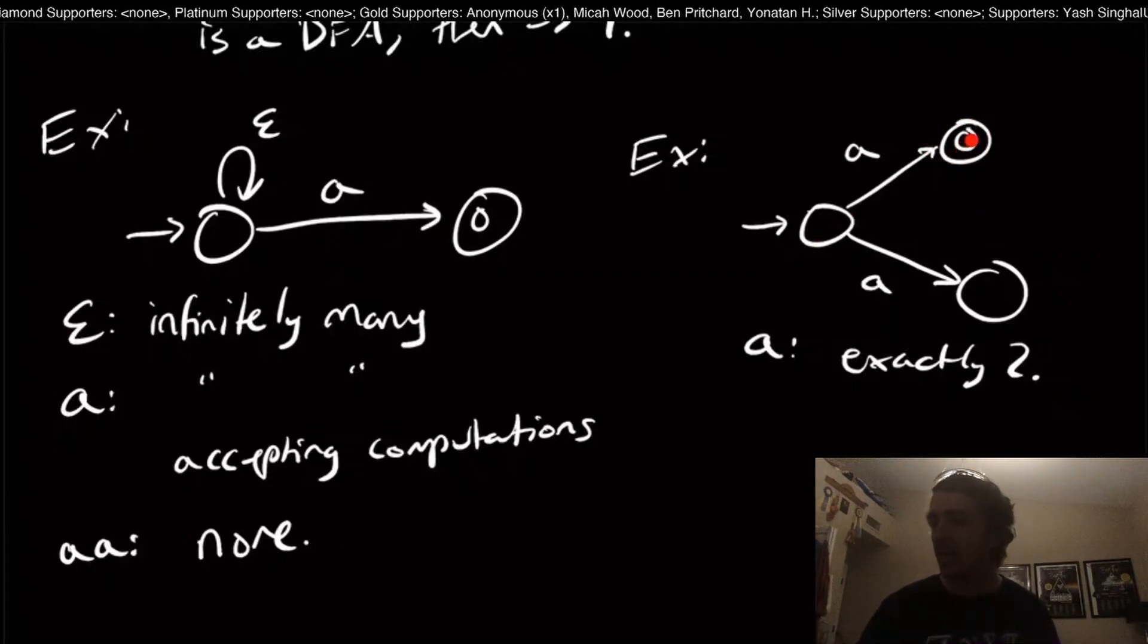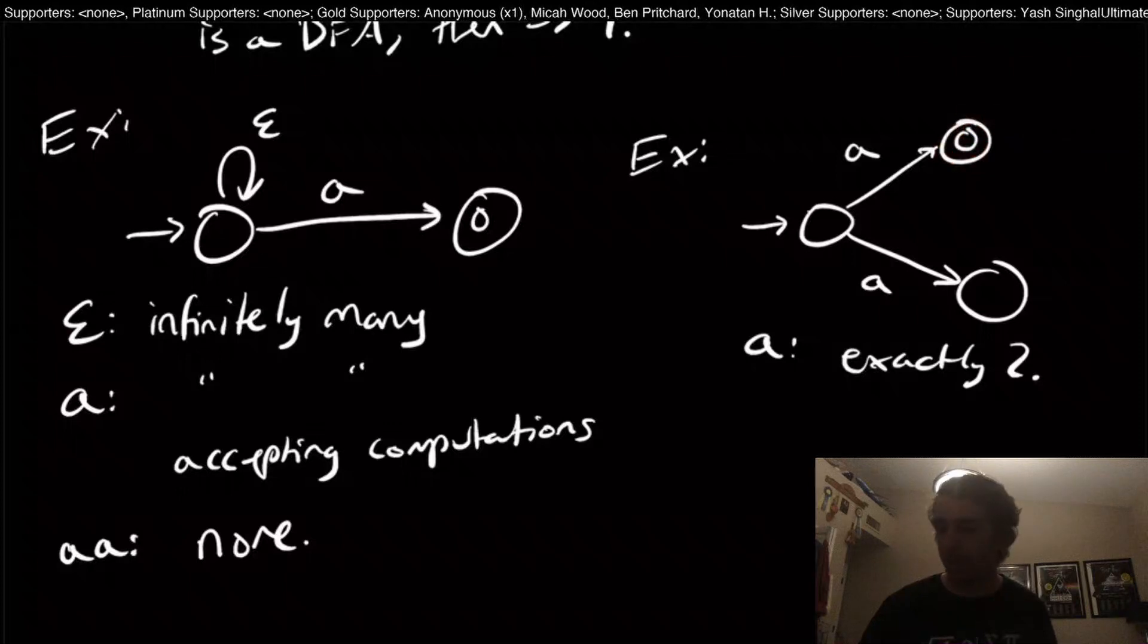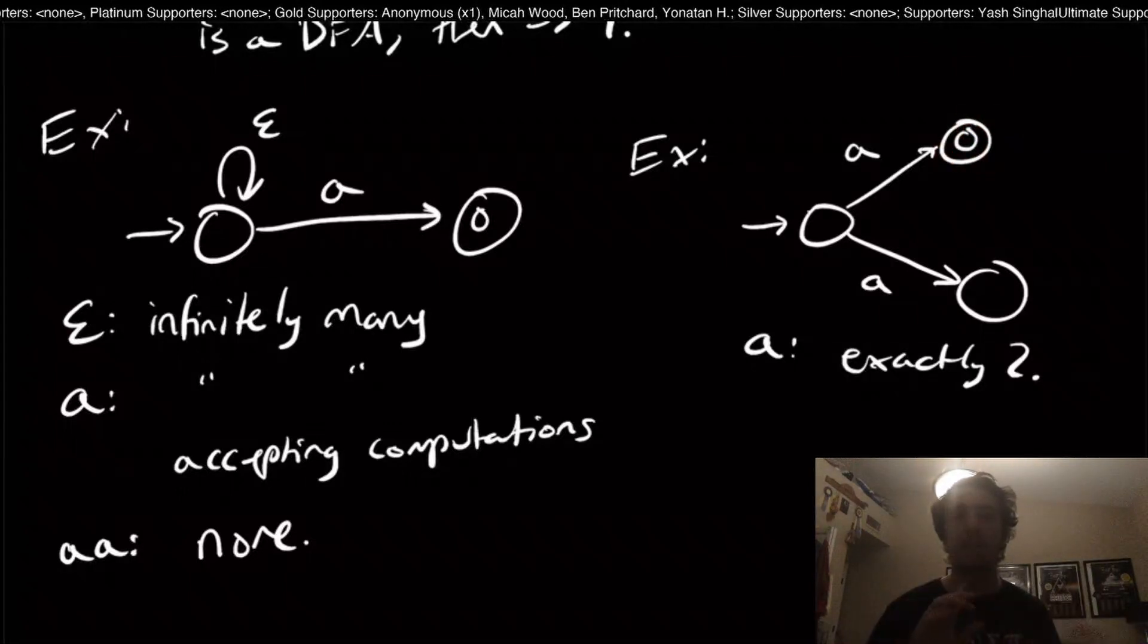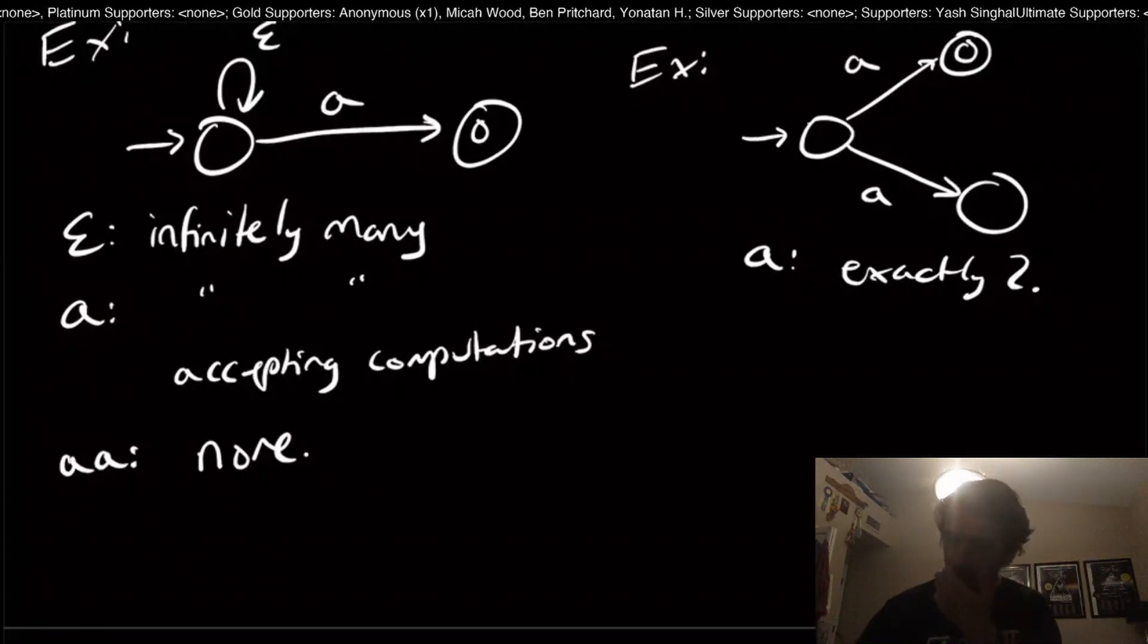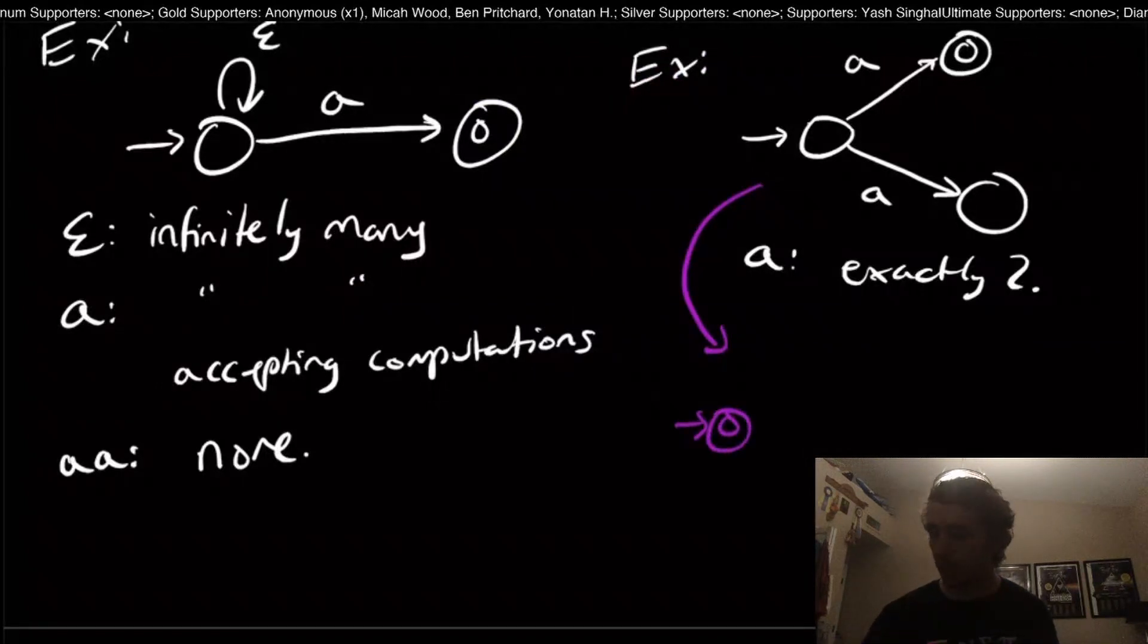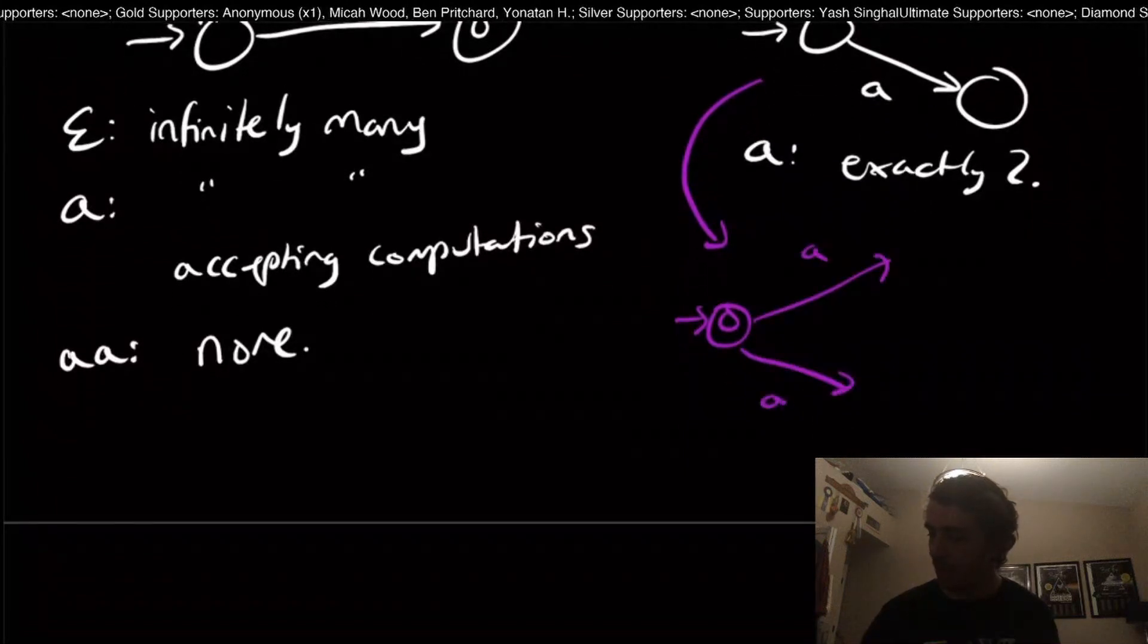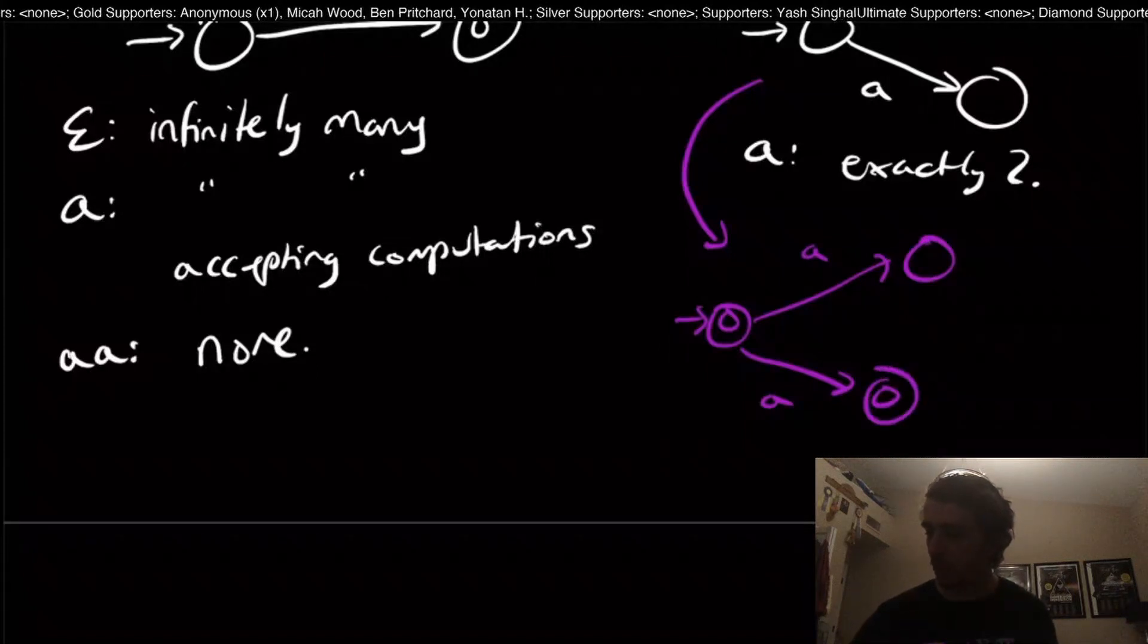Non-determinism means that as long as there's a choice that allows us to succeed, then we're good. But now let's suppose that we did that flipping final states idea that we did with the DFAs. Let's say that I transformed this NFA by flipping what states are final and which ones are not.